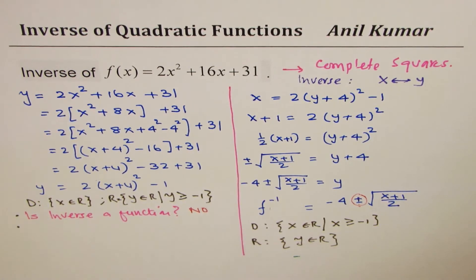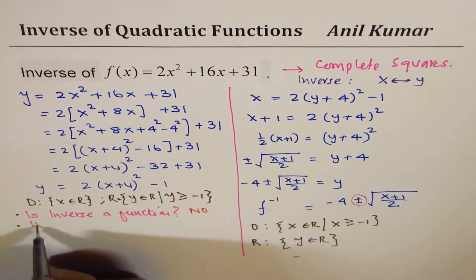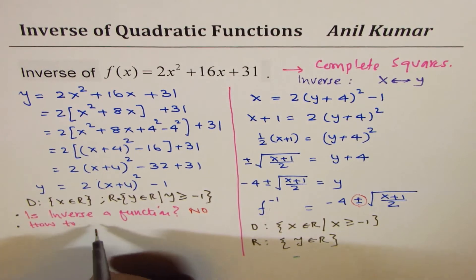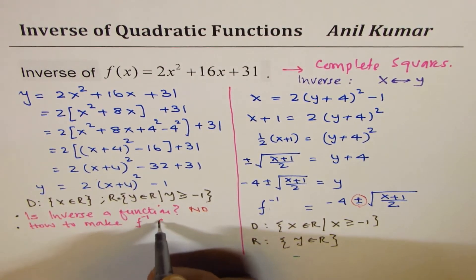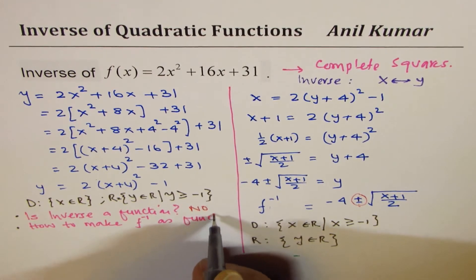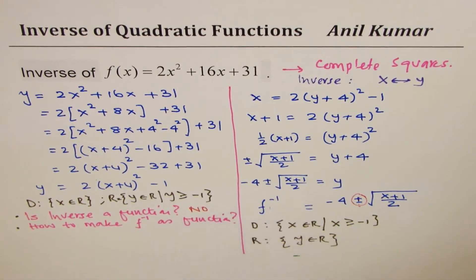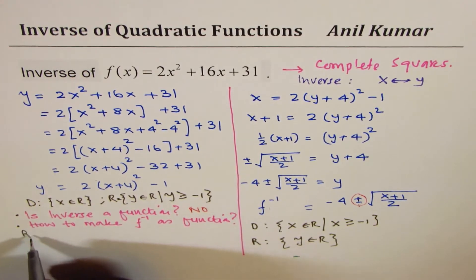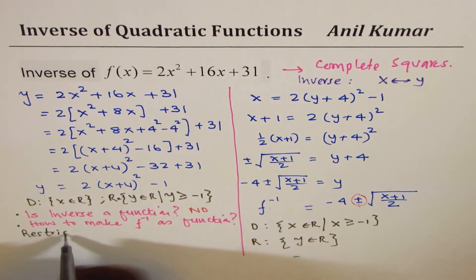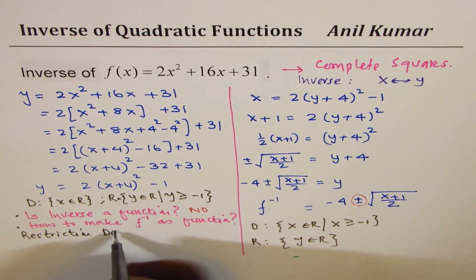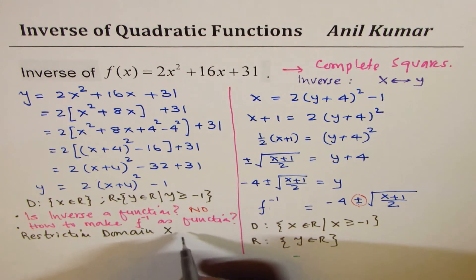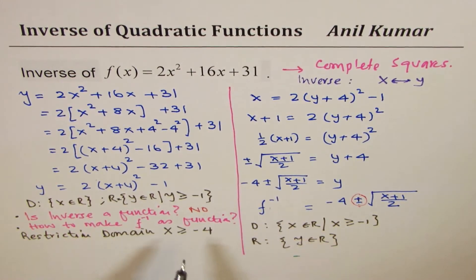Now, the second question which you may get is, how to make f inverse as function? So, normally, we could make it as a function by restriction. So, in our case, we could restrict domain as x to be greater than equal to minus 4.